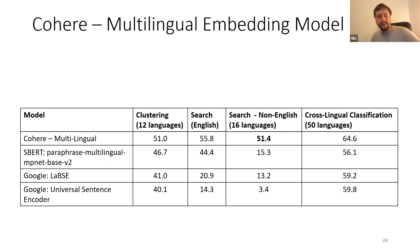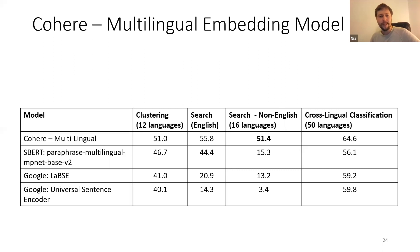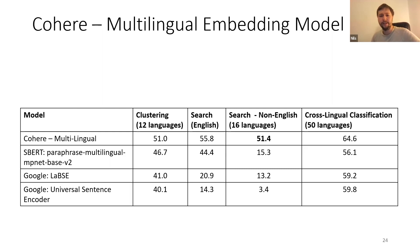We tested the models in different settings: clustering, search in English, search in non-English languages, and cross-lingual classification — where training data is only in English but classification is done in other languages. The biggest improvement we saw was for search in non-English languages, where previous methods all work only at the sentence level. We see a really big boost in performance on non-English languages.